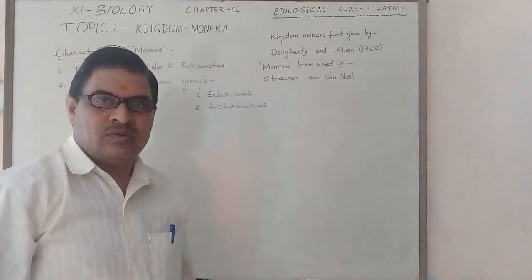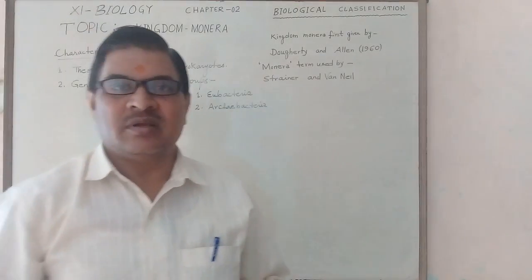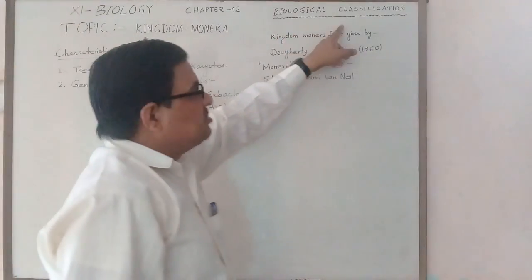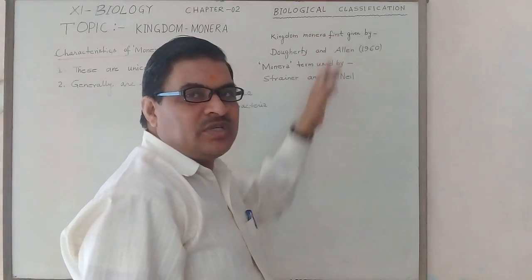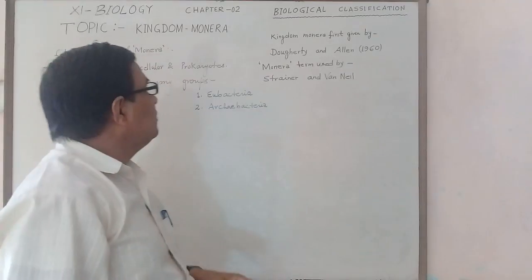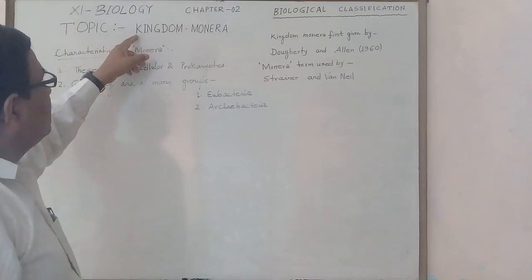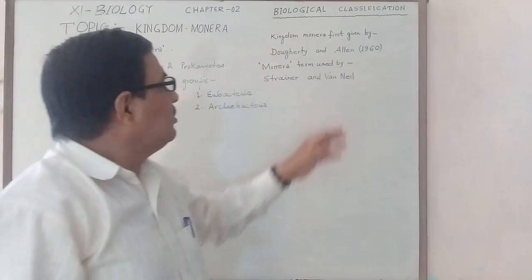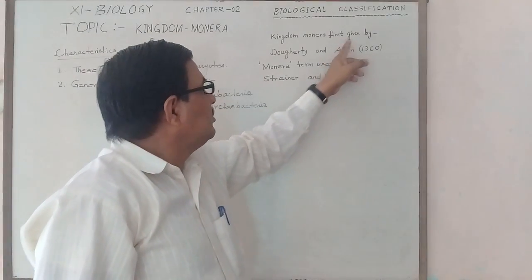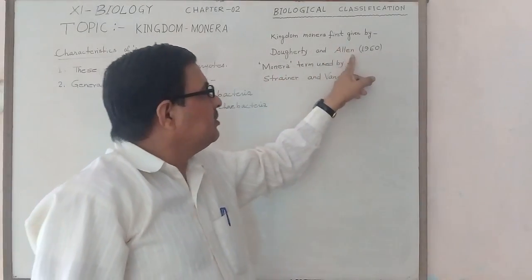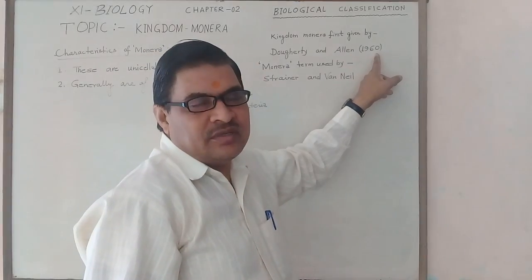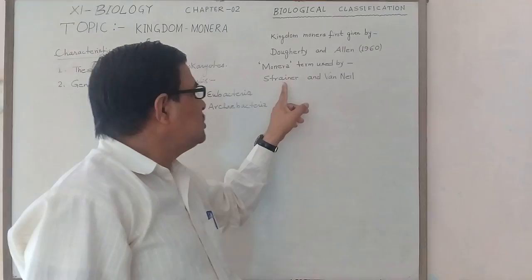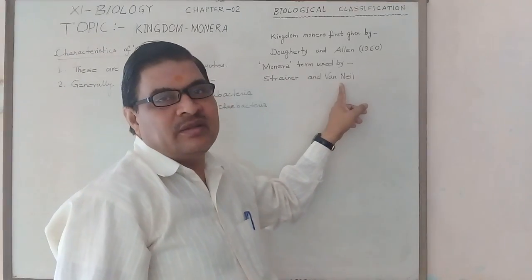Today I will discuss Biblical Classification. Its main topic is Kingdom Monera. Kingdom Monera was given by Doherty and Allen in 1960, although the term 'Monera' was used by Stainer and Ovanadeep.